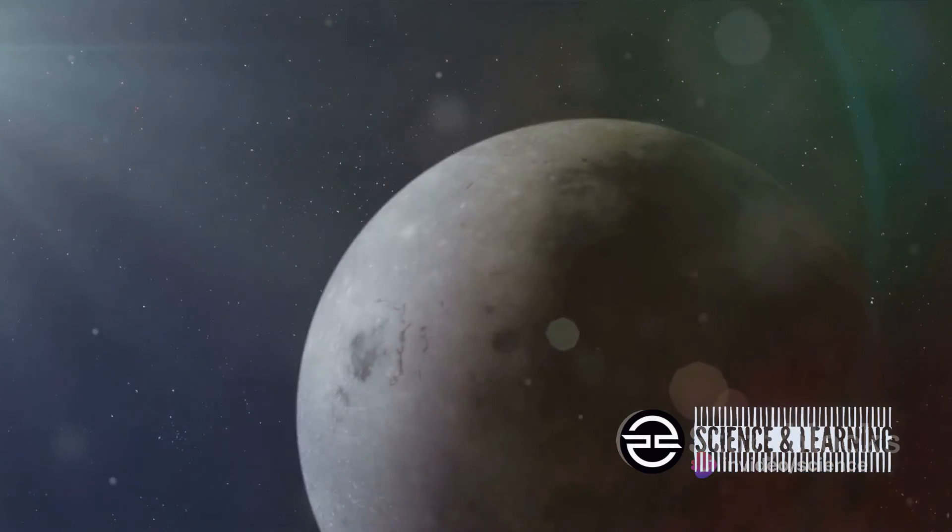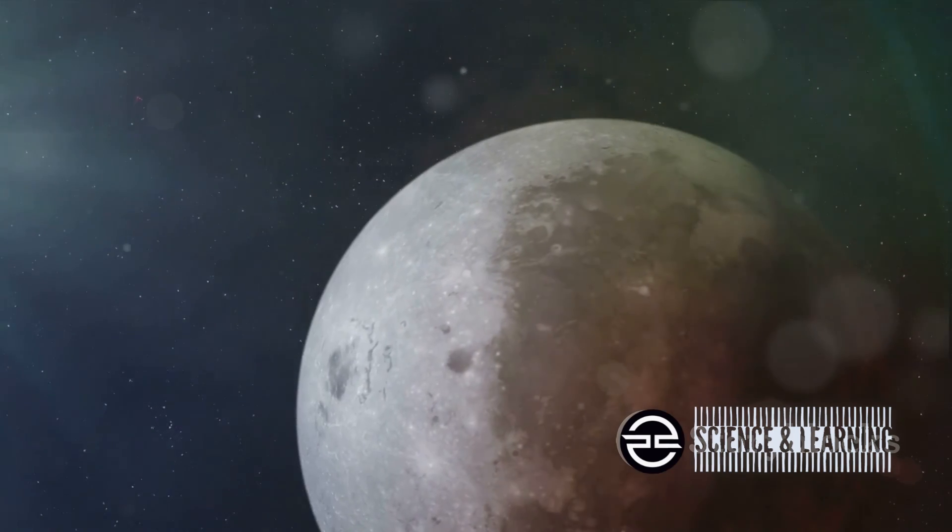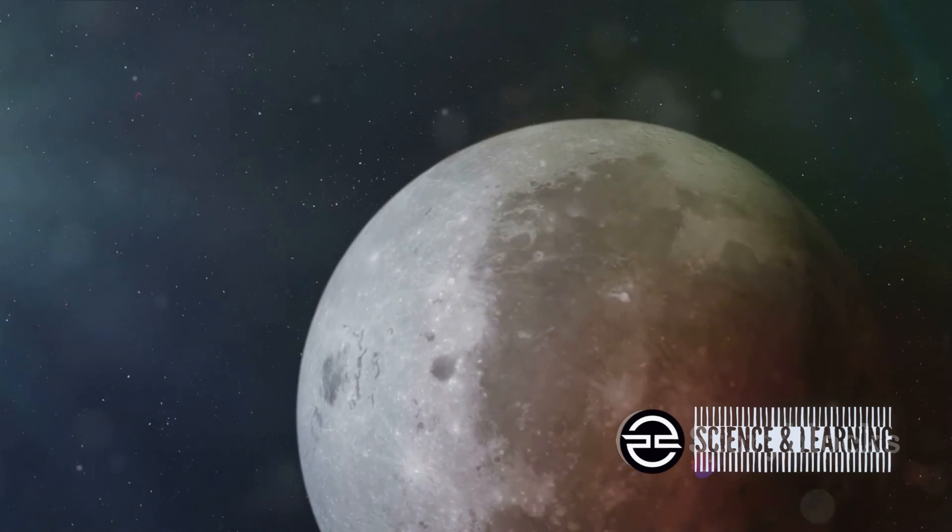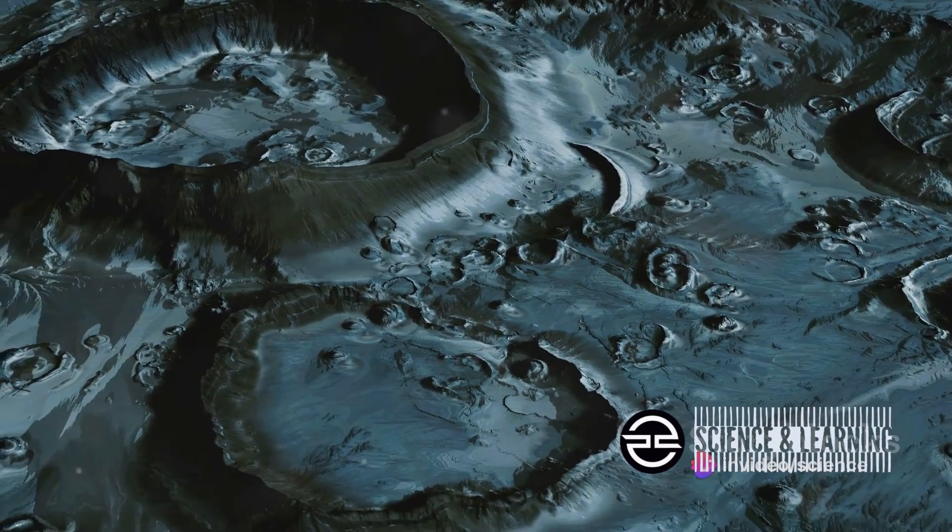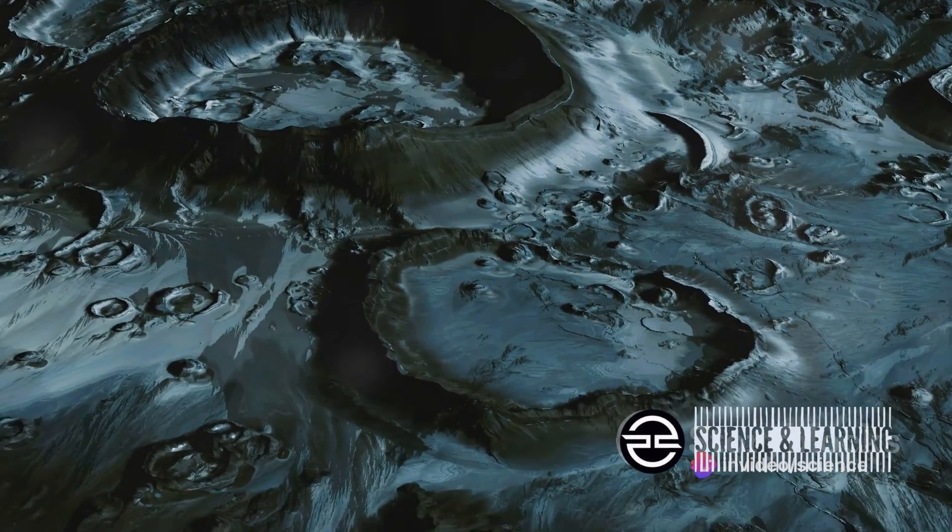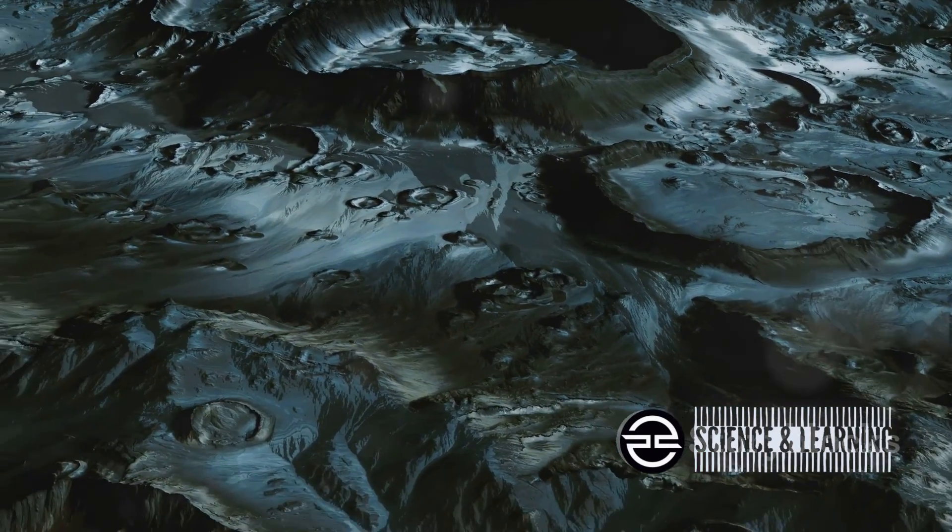Now, you might be wondering, where does cryovolcanic activity occur? Well, it's most often observed on bodies in our outer solar system, where temperatures are frigid enough for these volatile substances to freeze solid. This includes moons like Enceladus, Triton, and yes, even comets like our current spectacle, the Mother of Dragons.